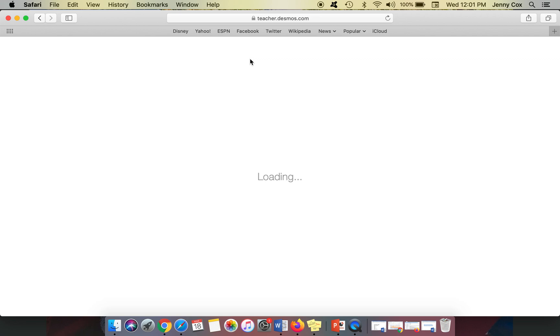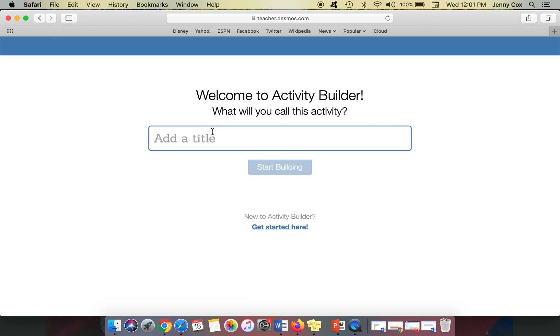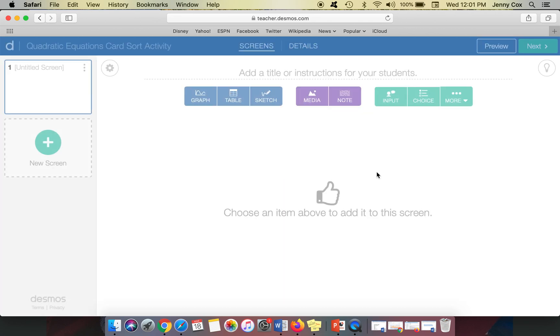So as you start building your activity, you have to give it a name. For instance, maybe I want to start with making a card sort. So I would say like quadratic equations card sort activity, and I would hit start building.